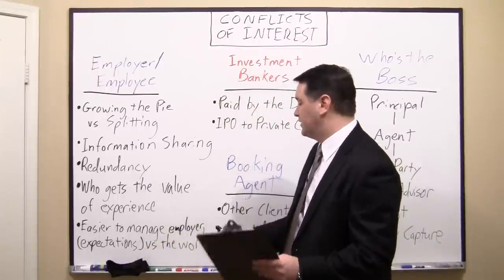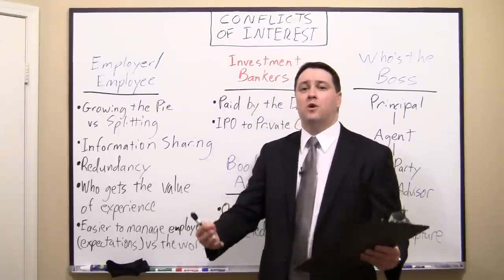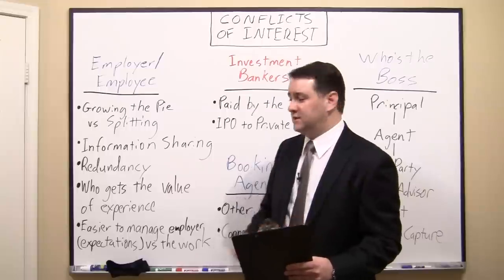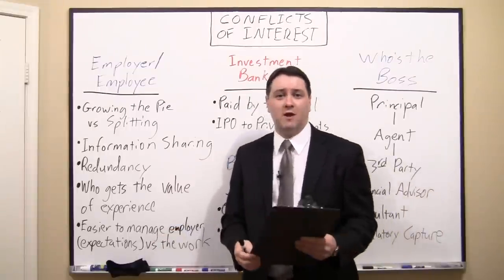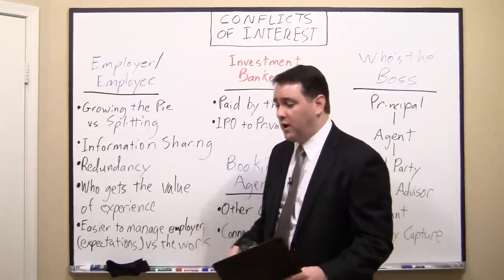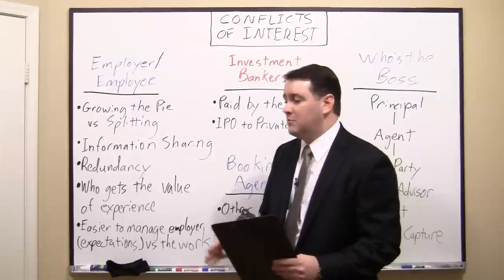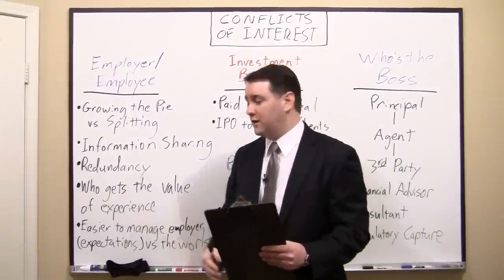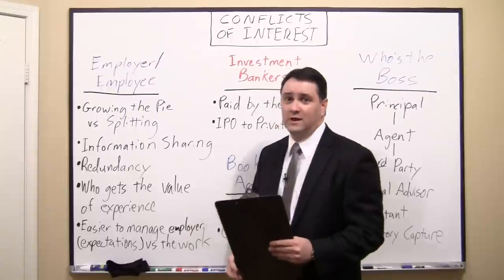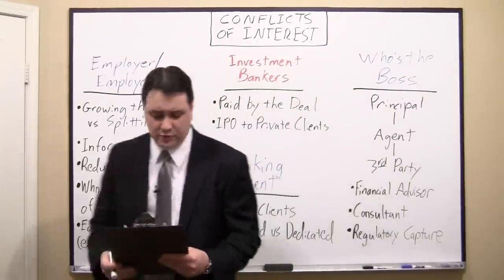Another good example is if you have a sales force on commission or bonus sales with an opportunity to game the system. For example, if I'm a sales rep and I know I've already hit my quota for this month or quarter, I can go to my customer and say, 'Let's wait till next quarter so I can get credit for it.' That's in my interest as the sales rep, but not necessarily in the firm's interest — so that's another conflict of interest. That covers the employer-employee relationship.